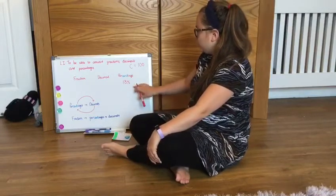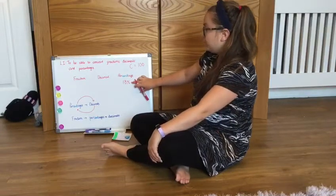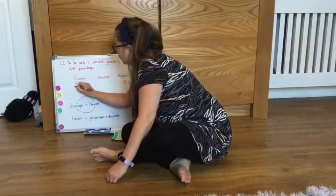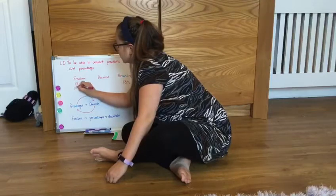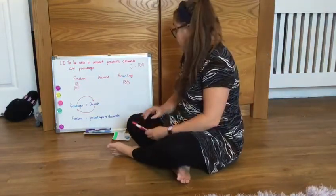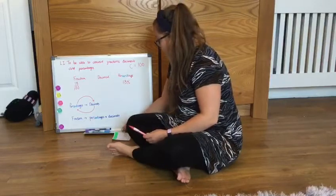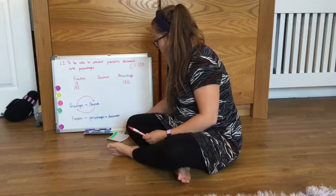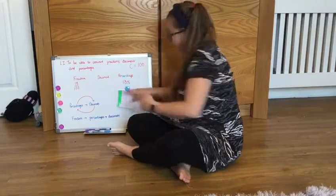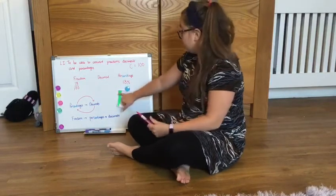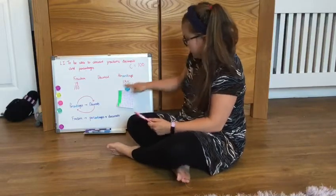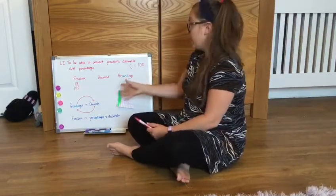So if we were to change this into a fraction we could write 18 over 100 - it's 18 out of 100. If I was to show that physically, here I've got my 100 square and I've got 18 parts coloured, so you can see 18%. So my 18 out of 100 helps me to visualise what we're actually doing.